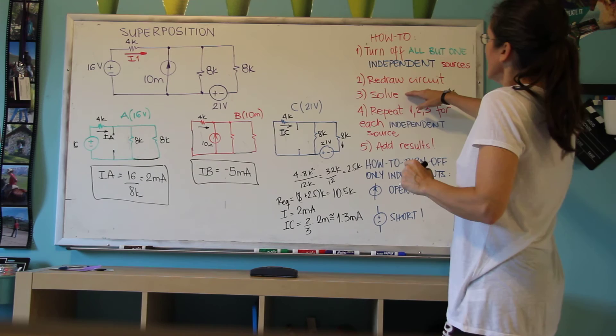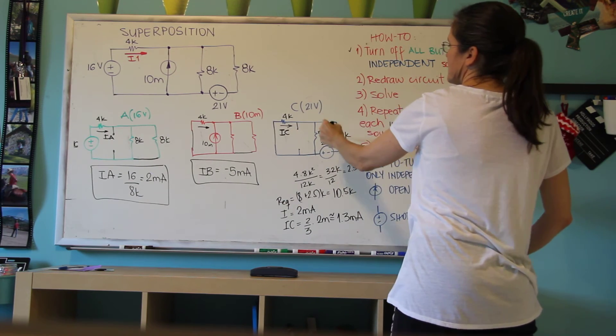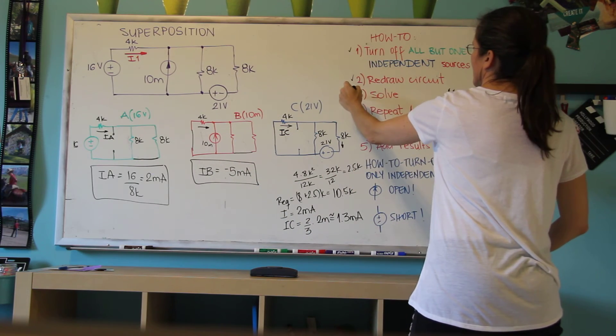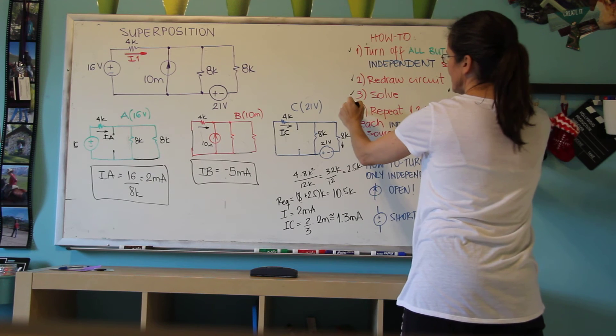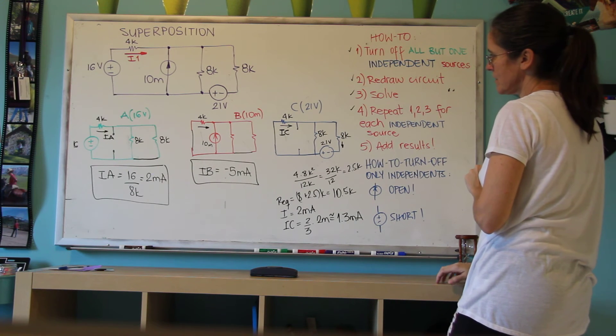So now, I had to turn off everything, each one of them. I actually left on only one of them. I redrew the circuit, I solved each circuit, and I repeated for each independent source. And I just need to add the results.